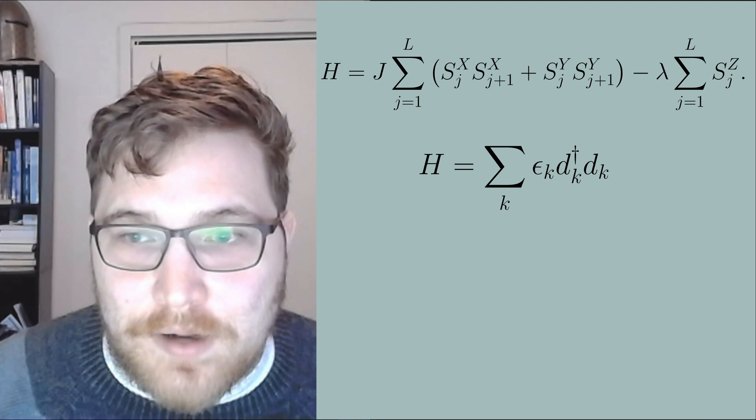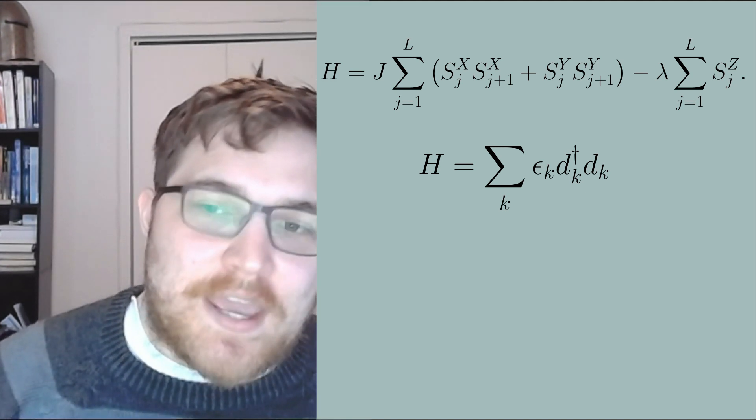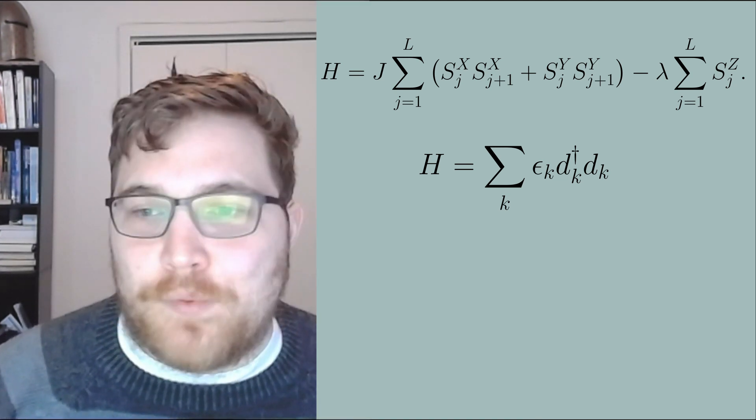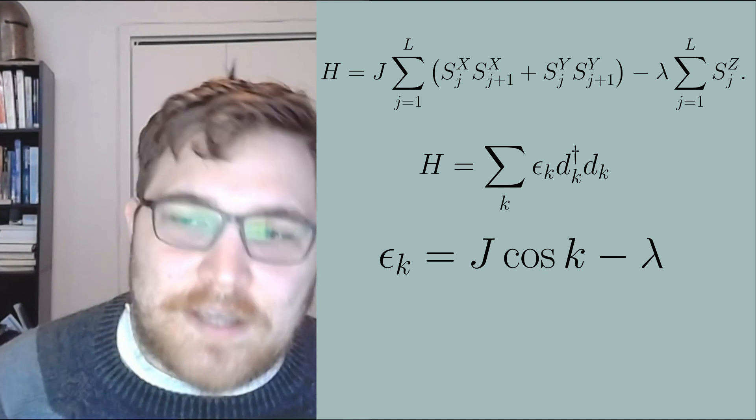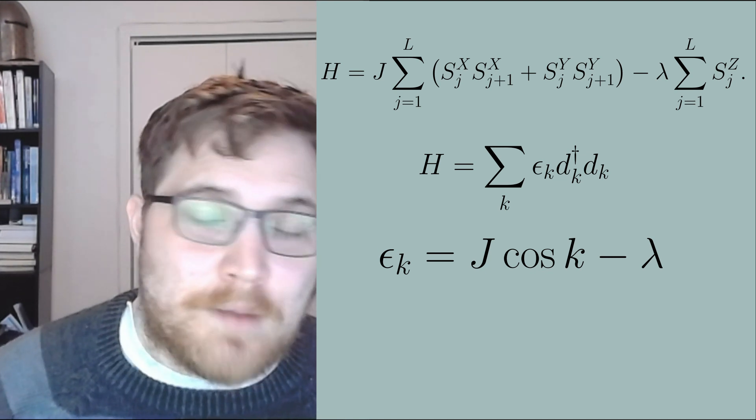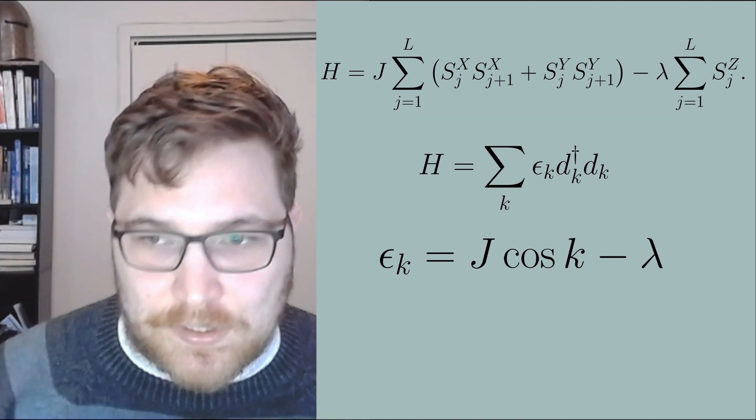Together they combine to be a number operator. The epsilon k's are given by the following expression: epsilon k equals j cosine of k minus lambda, where lambda is the magnetic field.